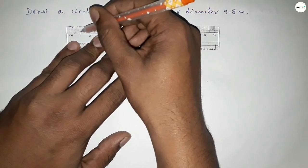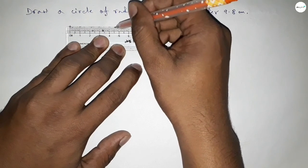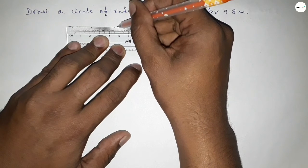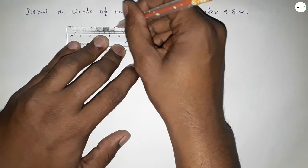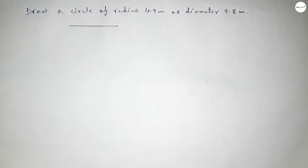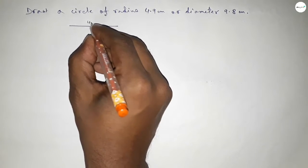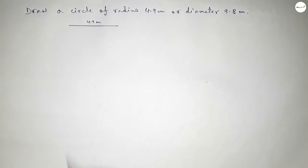So this is starting zero, one, two, three, four, four point five, six, seven, eight. So this is four point nine centimeter. We know that radius of a circle is half of diameter, so this is four point nine centimeter.